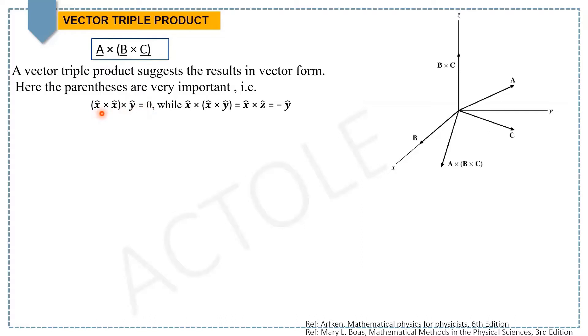you'll get zero because X × X = 0, so 0 × Y = 0. But if you put parentheses on X × Y, then X × Y = Z, and then X × Z = -Y.